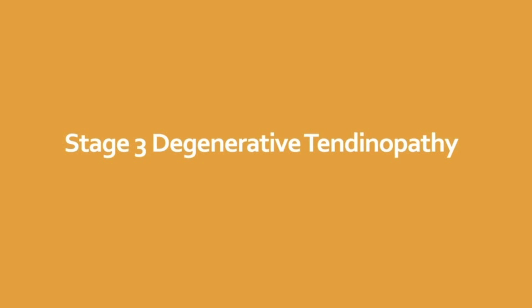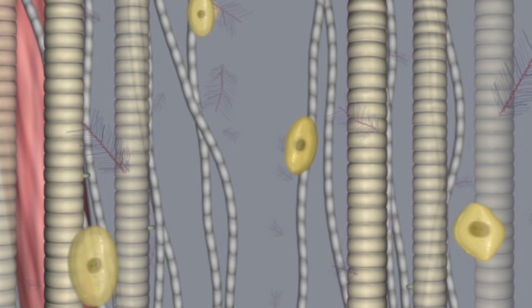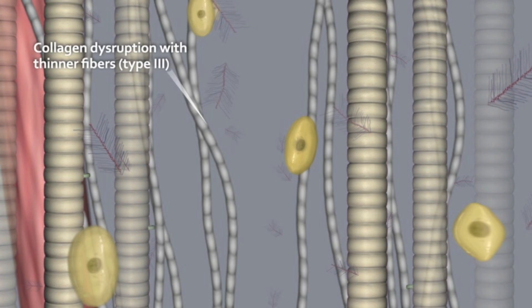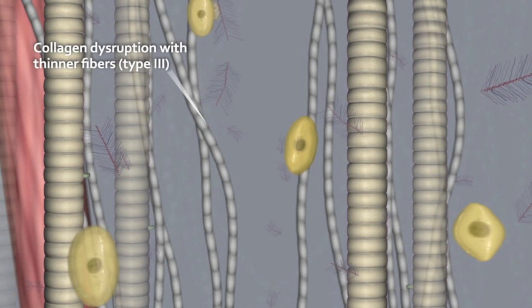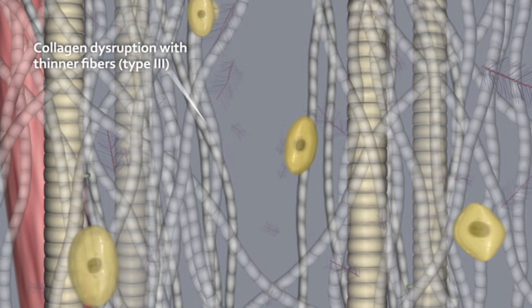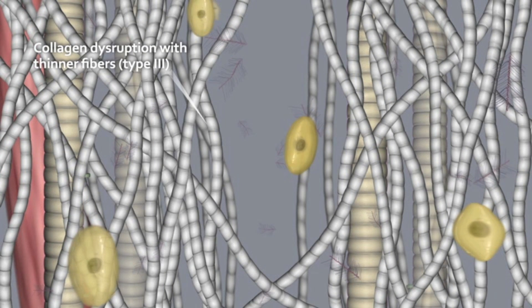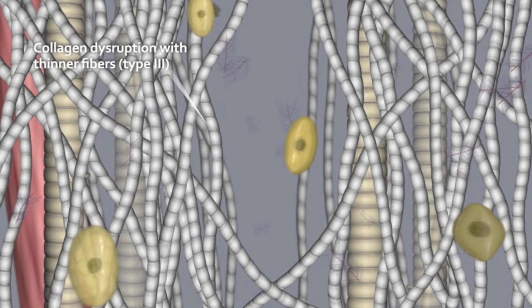Stage 3: Degenerative tendinopathy. A degenerative tendon has undergone permanent structural changes and less cellular activity is often seen. This often results in less pain and less reporting of symptoms. Type 1 collagen is often replaced with more type 3 collagen, making the tendon somewhat weaker and less able to tolerate tensile force. These structural changes are reported to be permanent and leave the tendon more susceptible to rupture.